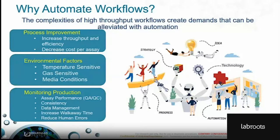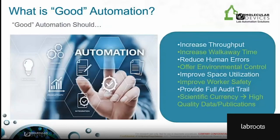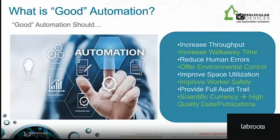Automation also allows for increased consistency between samples and improved assay performance by offloading tasks to strategically defined instruments. This will serve to reduce human error associated with scientific applications while also increasing walkaway time for scientists or technicians, enabling them to perform other tasks while the automated workflow is in progress. It's important to remember that not all automation is the same — different instrument components can be integrated into an automated work cell providing specific advantages.